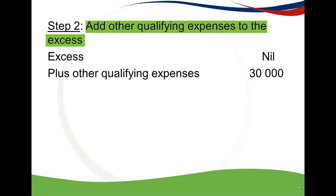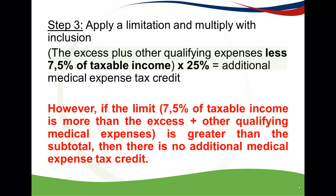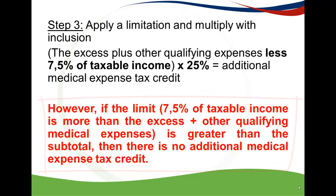Next, add qualifying expenses to the excess: $0 (excess) + $30,000 (qualifying expenses) = $30,000. Now apply the limitation: 7.5% of taxable income = 7.5% × $328,000 = $24,600. Since $30,000 exceeds $24,600, Rose qualifies for the AMETC. If the limitation had been $40,000 instead — greater than $30,000 — there would be no Additional Medical Expense Tax Credit.